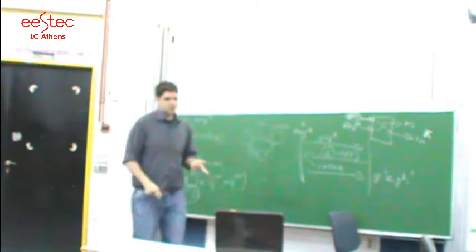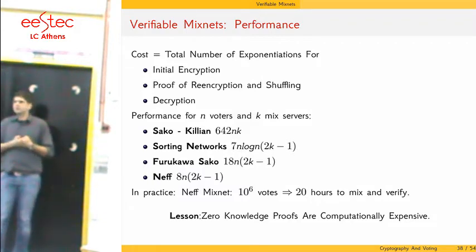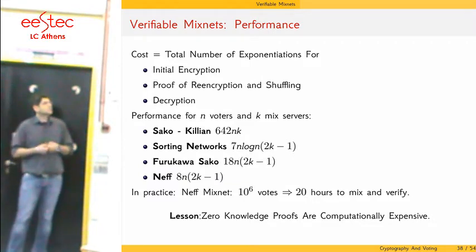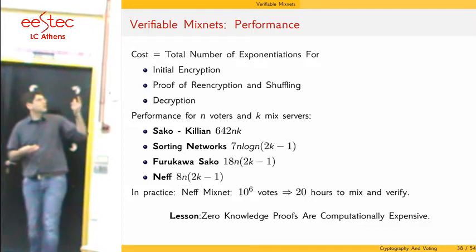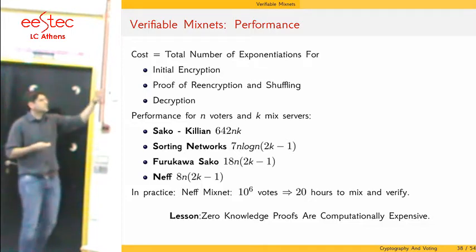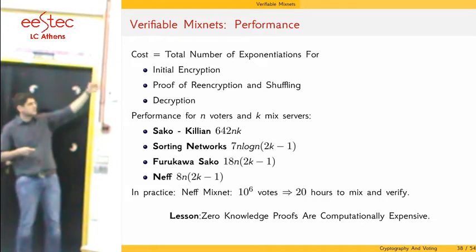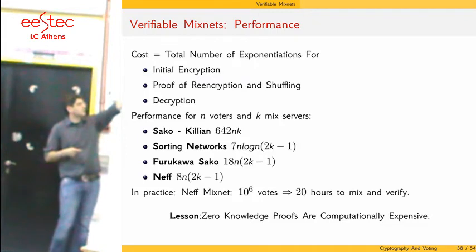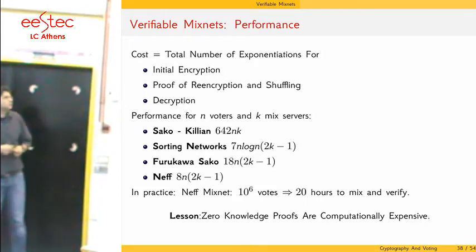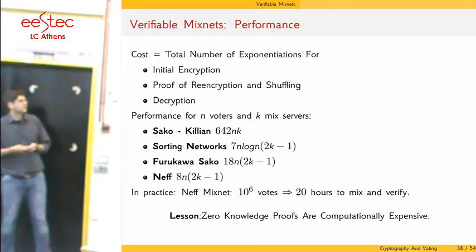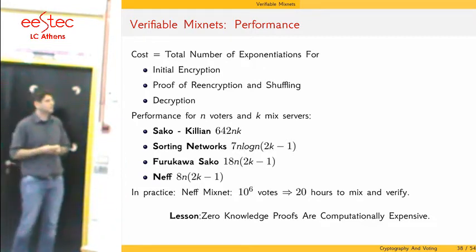Looking at the performance of verifiable MixNets, the cost we measure includes: initial encryption, shuffling and proof of correct shuffling, and decryption. The Furukawa-Sako and Neff MixNets are the cheapest, but even with the Neff MixNet — the fastest — verifying one million votes requires approximately 20 hours. Zero knowledge proofs are computationally expensive, so other approaches have been developed.